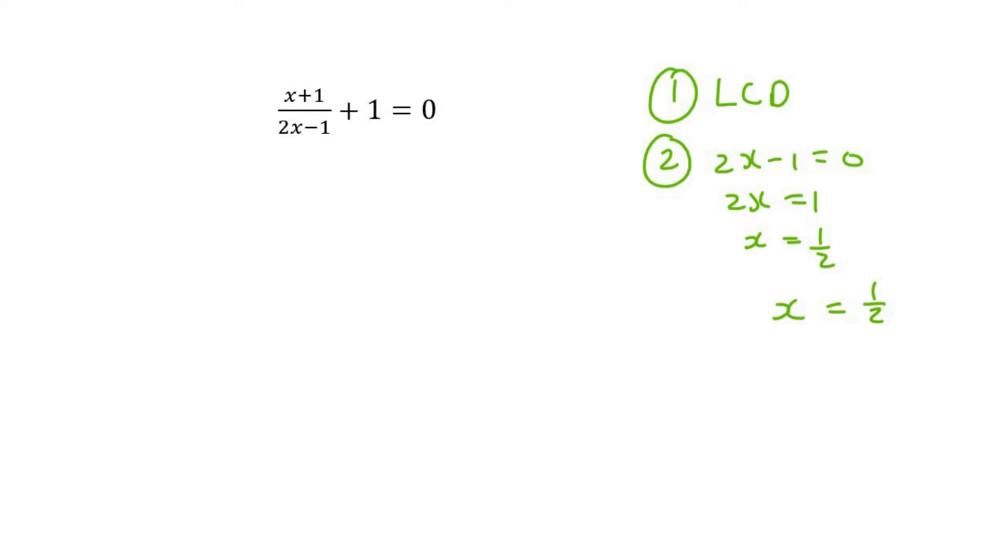Because if x does become a half, then this whole part at the bottom becomes a zero, and that's undefined, which is not allowed. So your teacher might call this the restriction. Just remember to show that in the test.